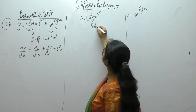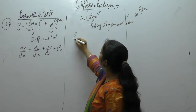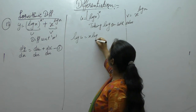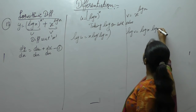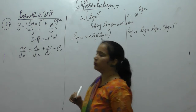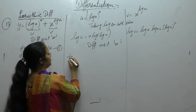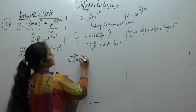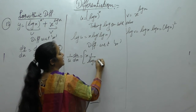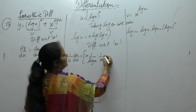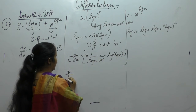Taking log on both sides. For u: log(u) = x · log(log x). For v: log(v) = log(x) · log(x) = [log(x)]². Now differentiate with respect to x. Derivative of log(u) gives 1/u · du/dx. First: derivative of log x is 1/x, where x is log x, so again derivative of log x is 1/x, plus log(log x). Derivative of x is 1. So we get du/dx = log(x)^x · [1/log(x) + log(log x)].